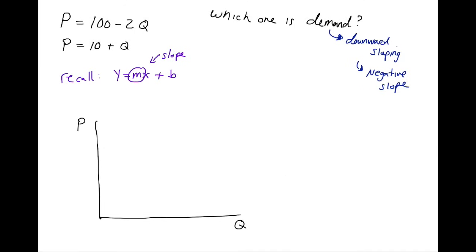So now that we know that our y is P and our x is Q, that must mean whatever is attached to the x must be the slope. So since this is a negative two right here, this must be demand because it has a negative slope.